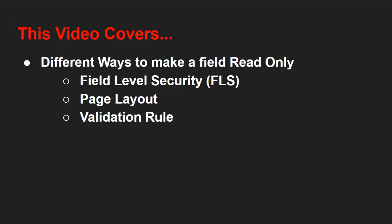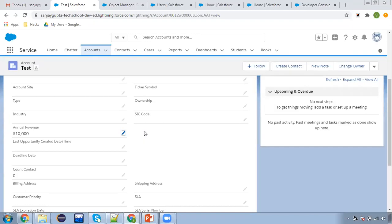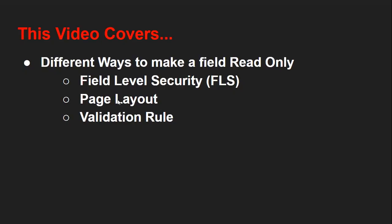You can also apply a validation rule with a profile check or record type check to cover System Admin as well. One difference is that with a validation rule, on record creation it won't throw any error, but on update it does. If we apply FLS or set the field read-only from page layout, while creating a record you also won't be able to enter any value.